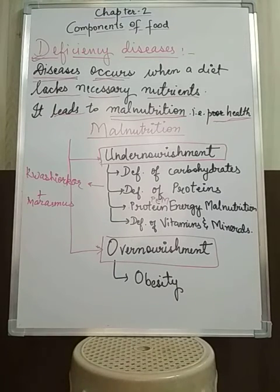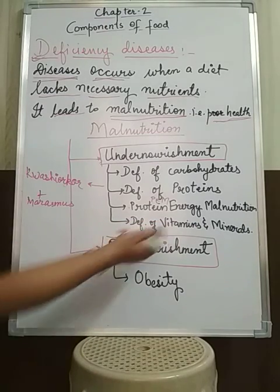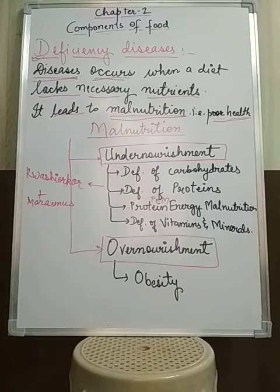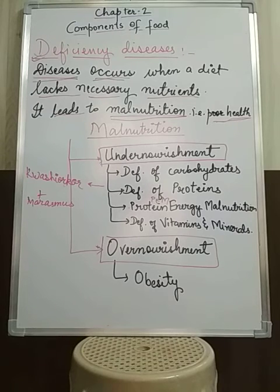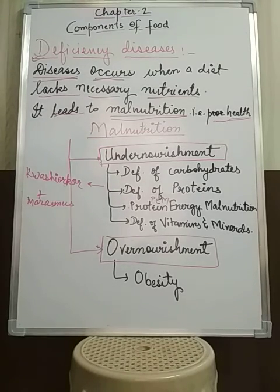Next is deficiency of vitamins and minerals. Vitamins and minerals are known as protective foods. If there is a deficiency of vitamins and minerals, the body will not be able to protect itself or fight against disease. There is a table of deficiency diseases: vitamin A deficiency causes night blindness, B1 causes beriberi, and B12 causes anemia — all of which were discussed when learning about nutrients.